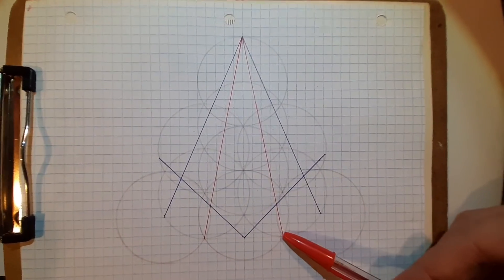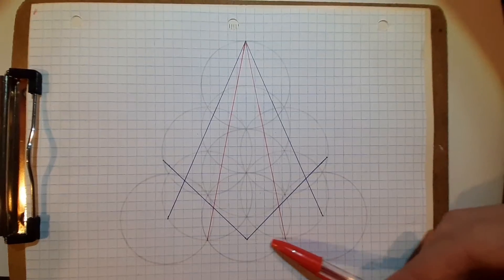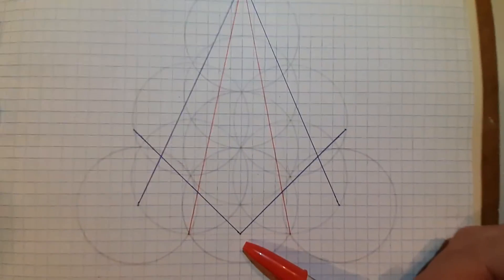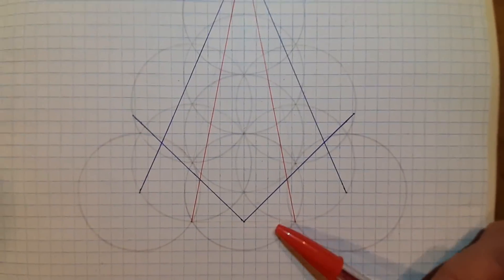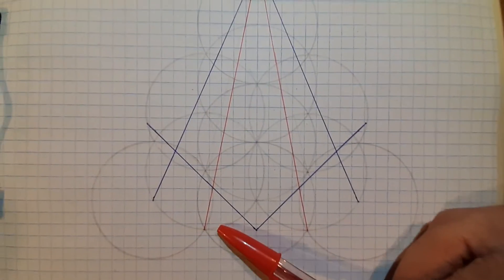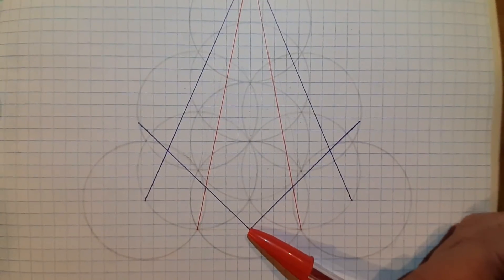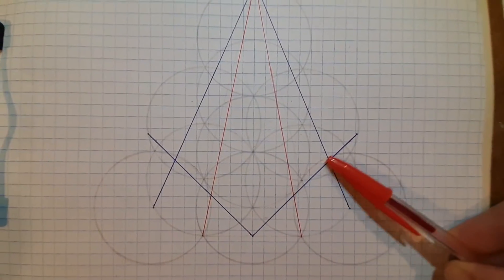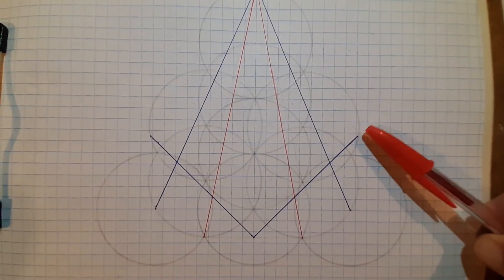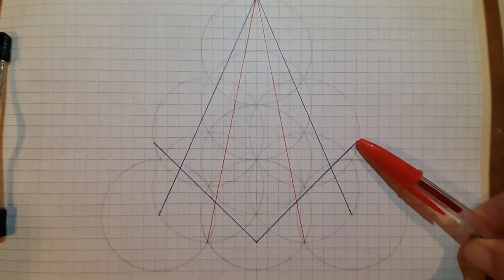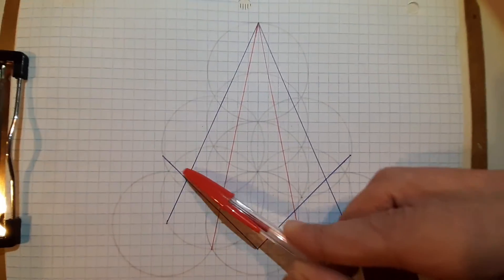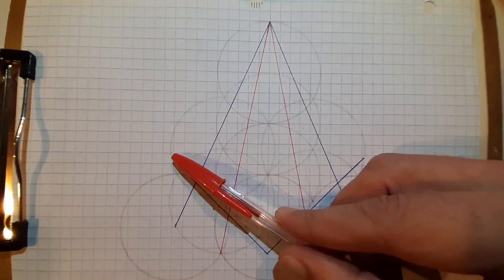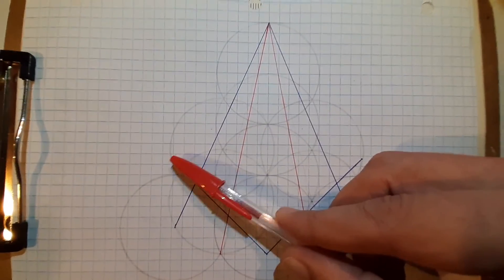Meets right there. If you draw a line from that point to that point right there, right in the middle you put your square on there, and that line goes right to the edge of that circle. The other end of the square goes exactly right to the edge of that circle.